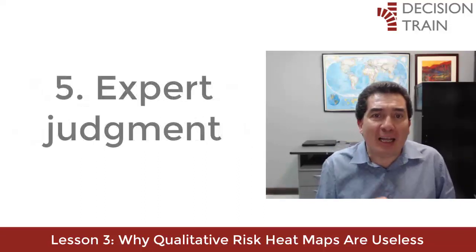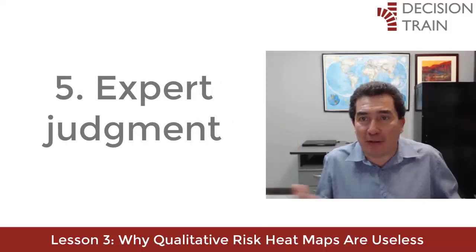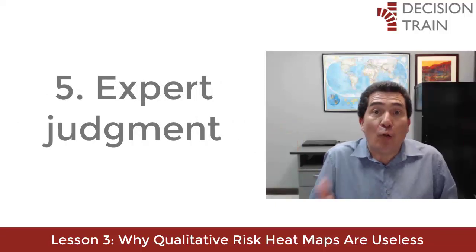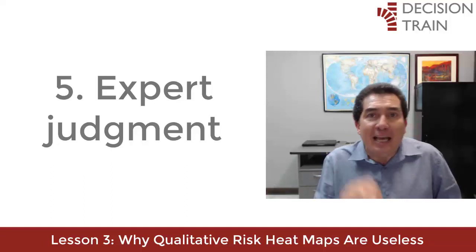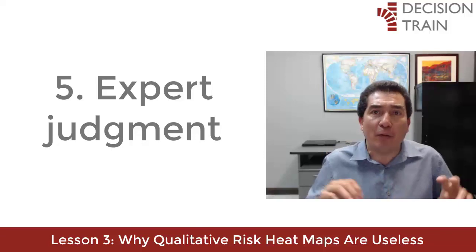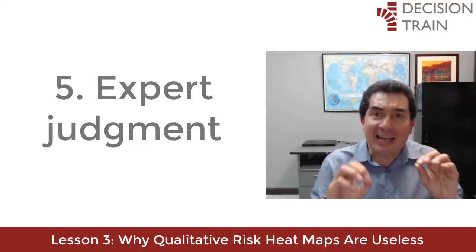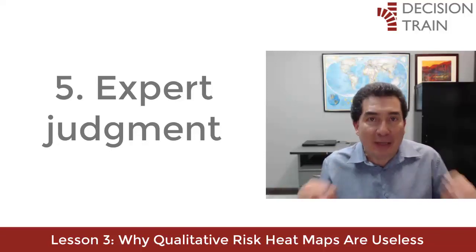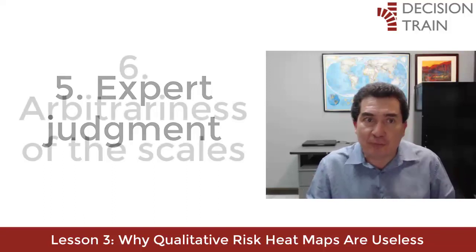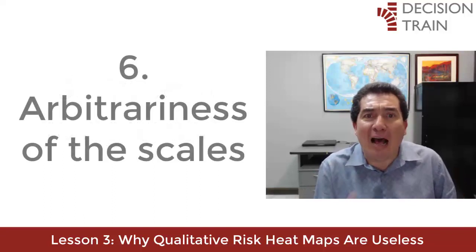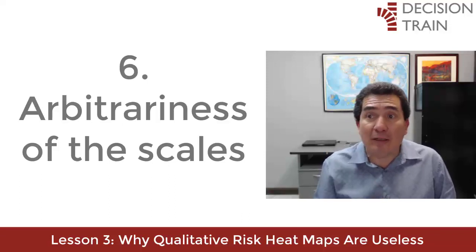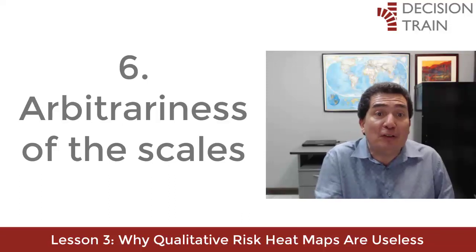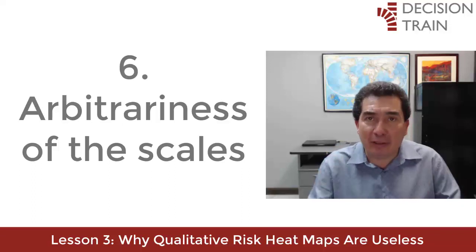Qualitative risk management pretends that the experts are infallible. In contrast, quantitative risk management knows the limitations of expert judgment and chooses to compensate by mitigating and adjusting the value judgments specified by experts. This is perhaps the most obvious weakness of risk heat maps, but in the long run it is simply a case of deliberate ignorance.